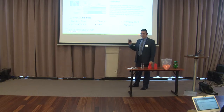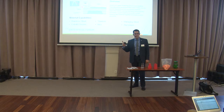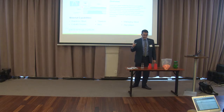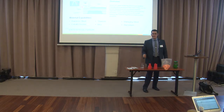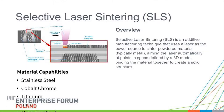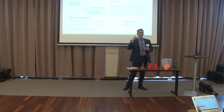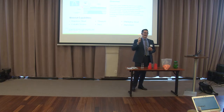This is a really interesting process called Selective Laser Sintering. It's a powder-based process for metal and plastic printing, but the key differentiator here is metal. You can work with a bunch of different metals. The key takeaway with powder-based processes is you can only work with one metal at a time.